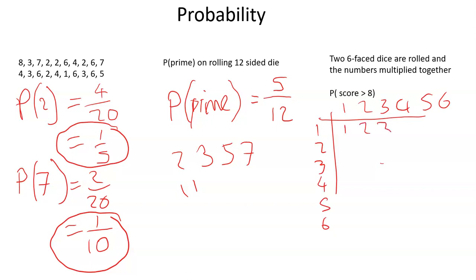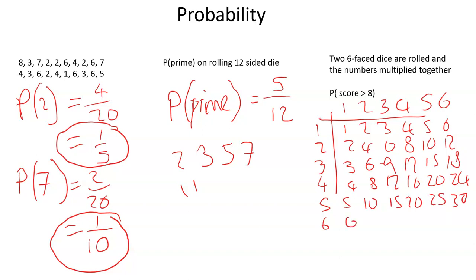So 1, 2, 3, 4, 5, 6. Then 2, 4, 6, 8, 10, 12. Then 3, 6, 9, 12, 15, 18. Then 4, 8, 12, 16, 20, 24. Then 5, 10, 15, 20, 25, 30. And 6, 12, 18, 24, 30, and 36.